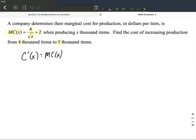This means we're going to be able to determine this cost by integrating the derivative going between 4,000 and 5,000 items. Those are x values, and we're going to insert the marginal cost function here, integrated with respect to x.